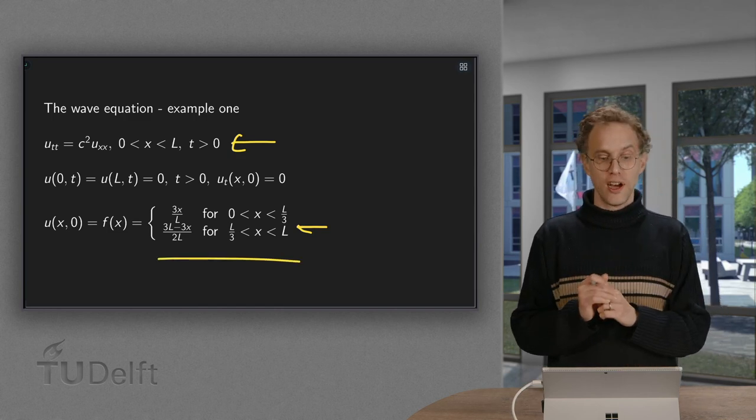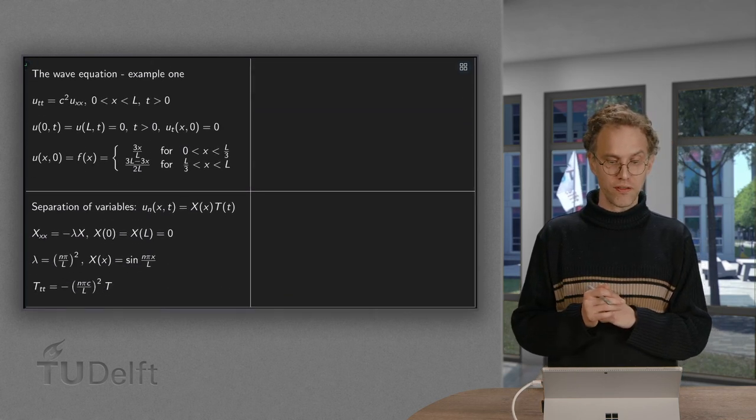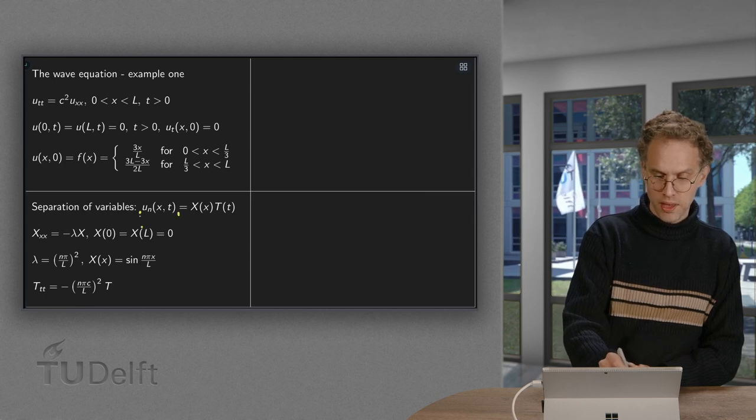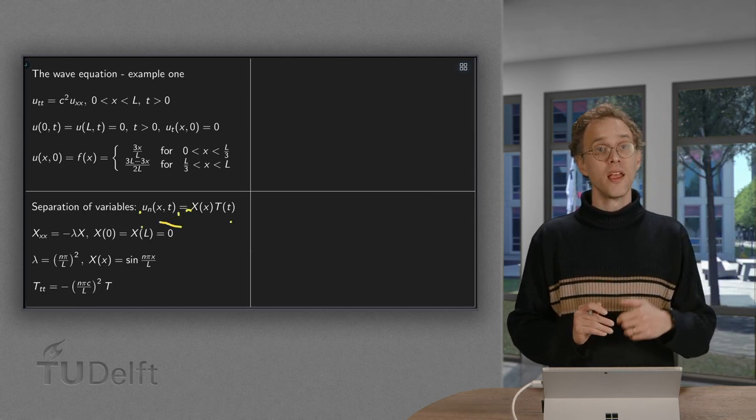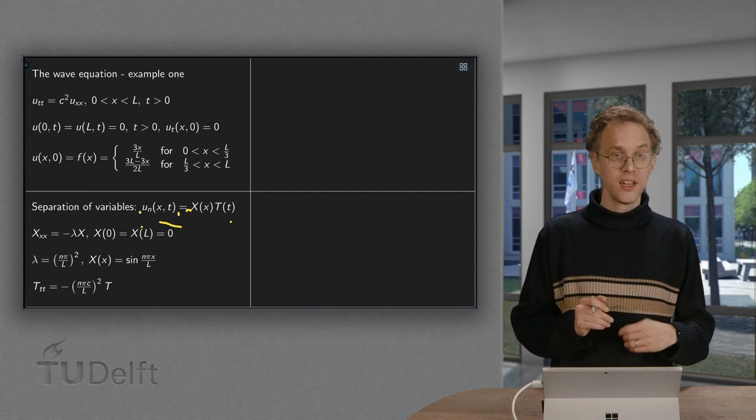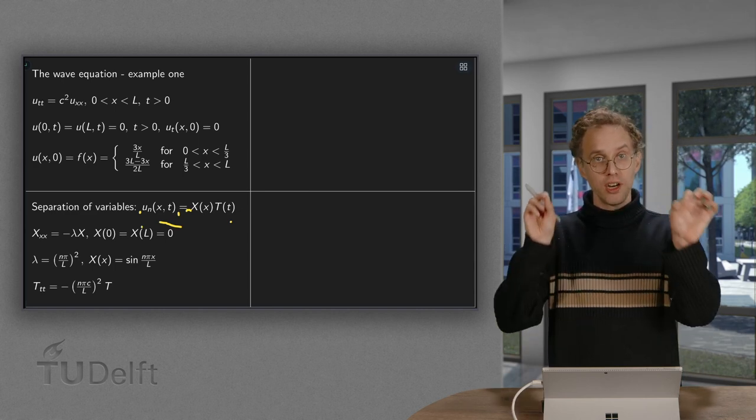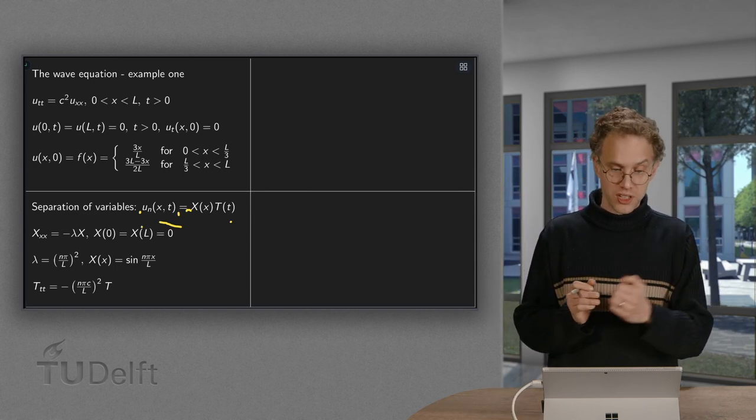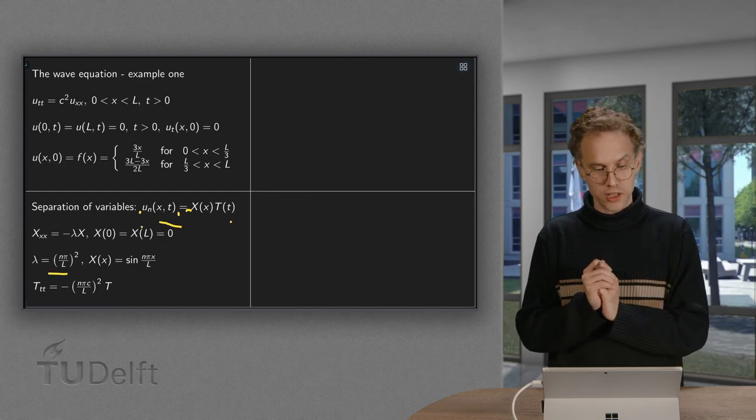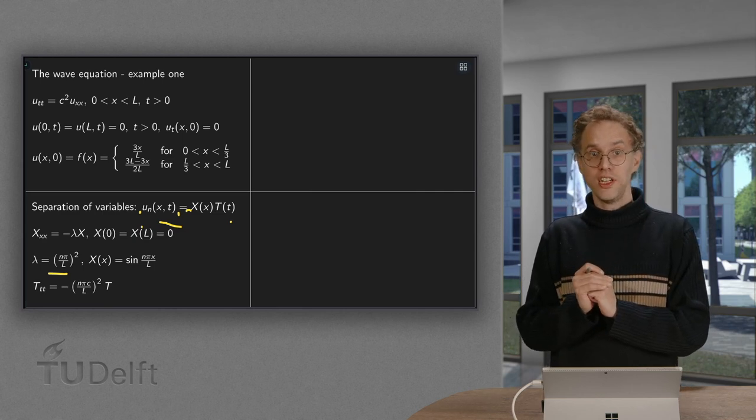We first start with solving our wave equation using separation of variables. As usual, you have u equals X of x times T of t. We plug this in. You get Xxx equals minus lambda times X. Zero at both endpoints means you get the sines and eigenvalue n pi over lambda squared. So that's in the previous video. This is the same as heat equation.